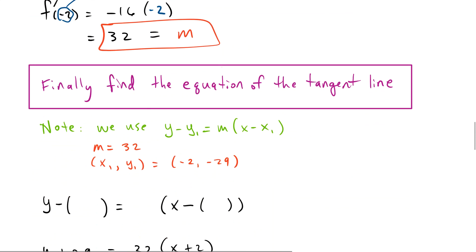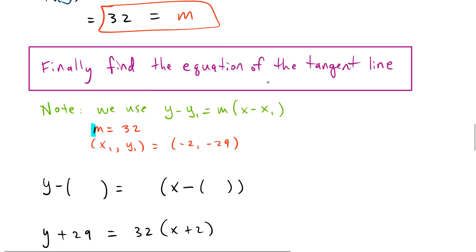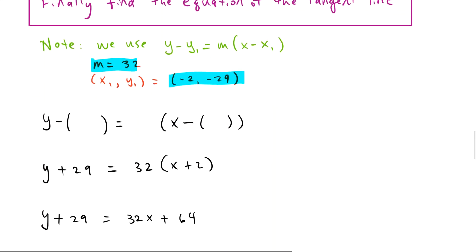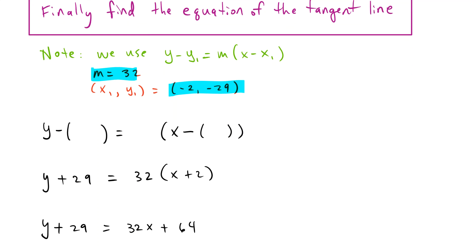Now finally, we can find the equation of the tangent line. Because now we have a point which we had from before, and we have a slope. Our slope is 32. Our point is negative 2, negative 29. So now this just reduces to an algebra problem. If we plug in the slope and the point into our point-slope form.